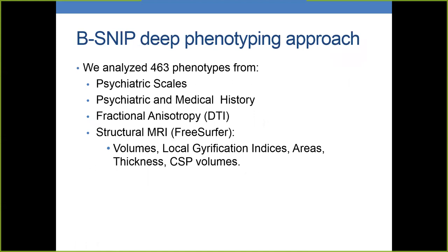The BISNIP deep phenotyping approach is aimed to determine what endophenotypes or sub-phenotypes are related to disorders — in this case, psychiatric disorders with psychosis. Here we analyze 463 different phenotypes from psychiatric scales, psychiatric and medical history, DTI, and structural MRI extracted with FreeSurfer, including volumes, gyrification indices, areas, thicknesses, and volumes from the cavum septum pellucidum.